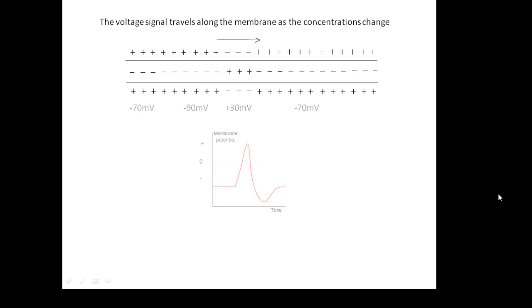There's a graph that you should be able to sketch — an important graph — which is how the voltage changes with time at any point. We start at minus 70, then the voltage shoots up all the way to plus 30 millivolts, but then it goes down again, becomes negative again, down to about minus 90, and then it creeps back up to minus 70 where we started. This little blip of voltage is our signal, our nerve impulse, our action potential.